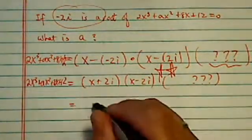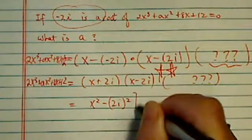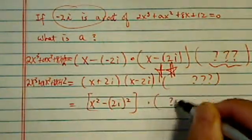This one is easy. We're going to use difference of squares, which is x² - (2i)². We still don't know what this part is.